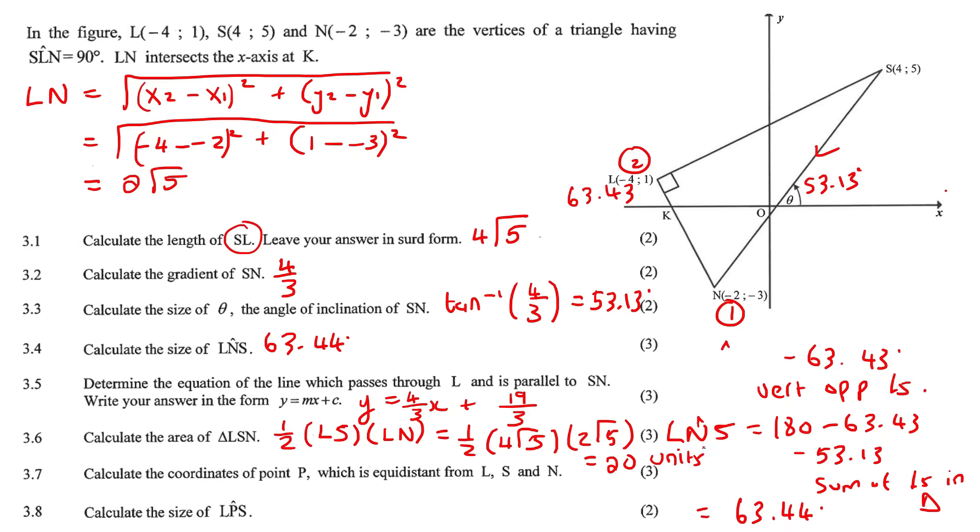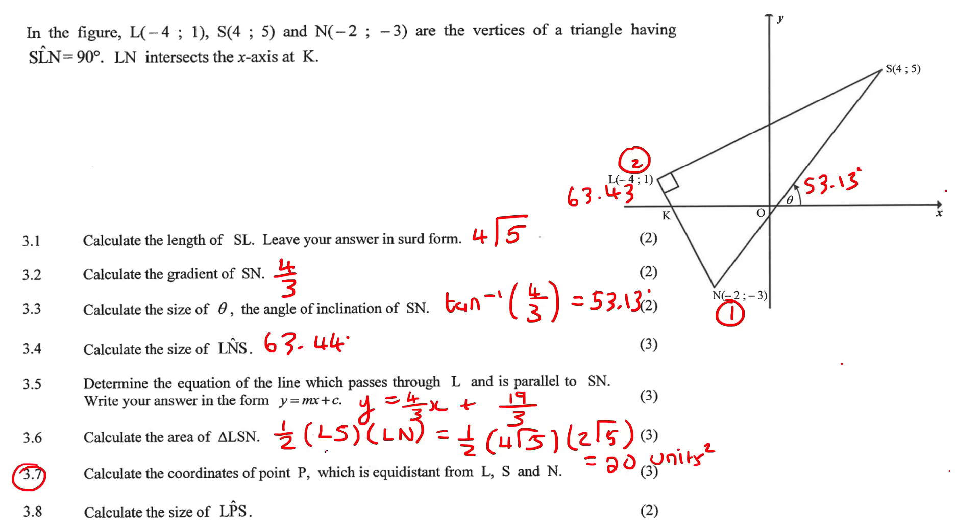This one says calculate the coordinates of point P, which is equidistant from L, S, and N. So point P is equidistant from L, from S, and from N. That would mean then that L, S, N could be a circle, and point P would have to be the center of that circle. Because then to all places, that would be the radius. But we already know that this line must be the diameter of that circle because only a diameter could make a 90 degrees. So that means point P is somewhere on this line over here. So to find out exactly where that is, you could just go find the, let's just do this a bit better. You could just go find the midpoint of these two points.